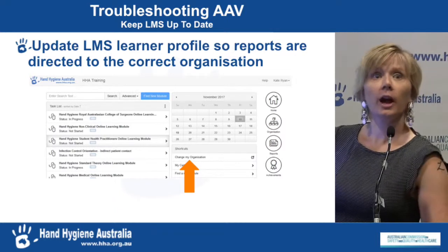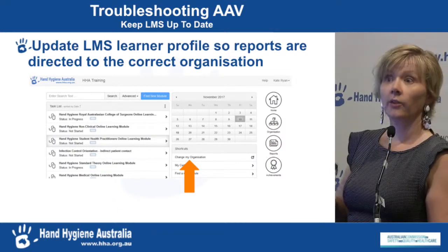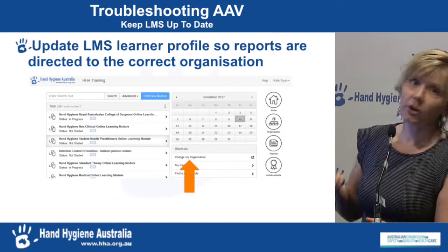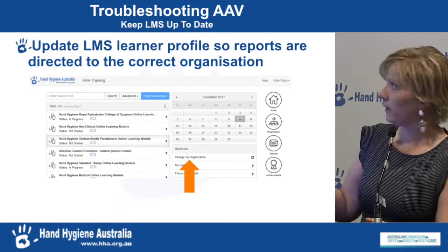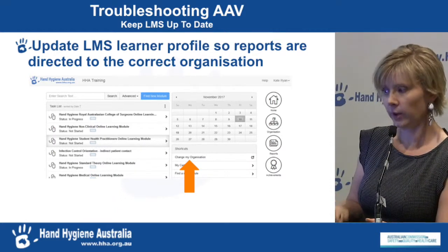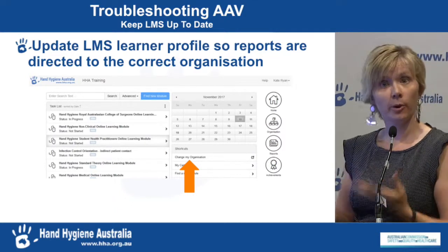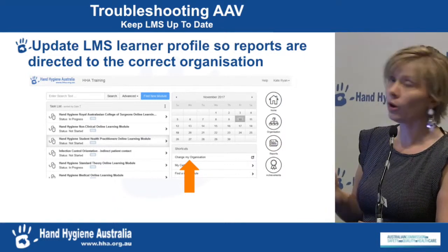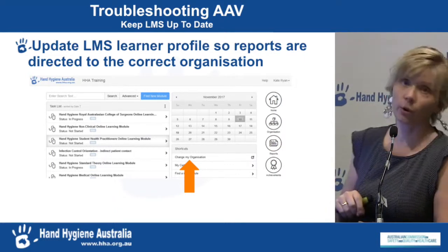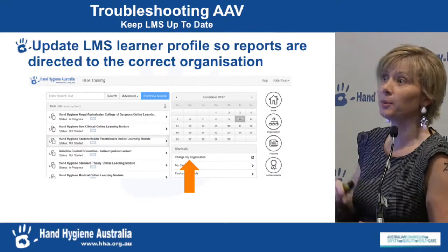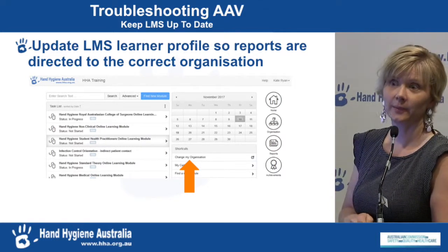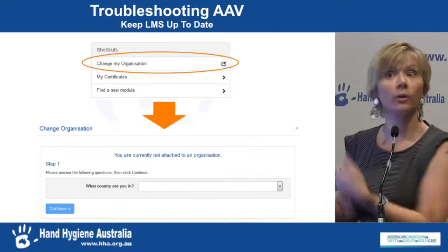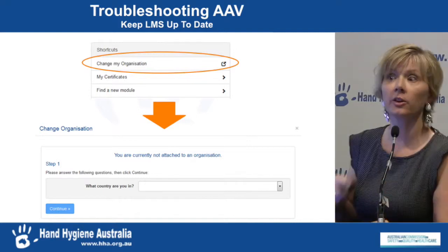In the LMS, you can update the organisation you're attached to so your report goes to the right place for annual completion tracking. When you log in on your homepage, there is now a button that says 'change my organisation.' When you click that, it goes back through the registration process of choosing who you want to be attached to. If you press that button and it says you're not attached to an organisation, then you're one of those 690 people in the holding organisation. Encourage all your auditors to log in and check where they're attached.